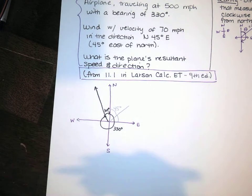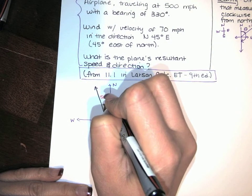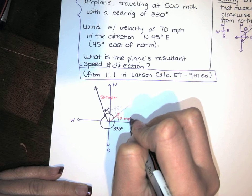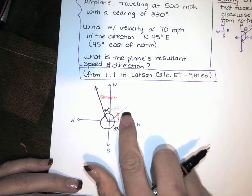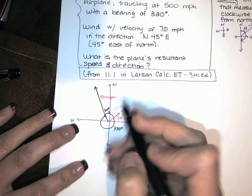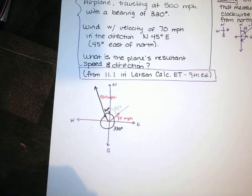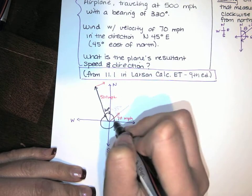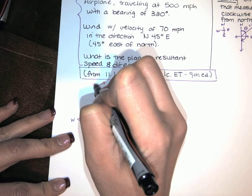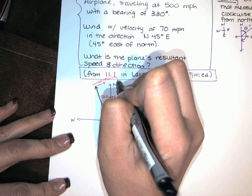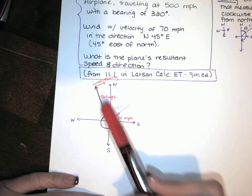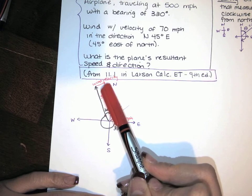Obviously this is not to scale, but this is a 500 miles per hour velocity vector. Now I'm adding to it a 70 miles per hour velocity vector pointing in this direction. If I want to add those two vectors, I have to add tip to tail. So I'm going to do this vector plus this vector. Here's the wind velocity. The question asks: what is the plane's resultant speed and direction? If it was going this way without any wind, and then this wind pushes the plane that way, where does the plane end up?